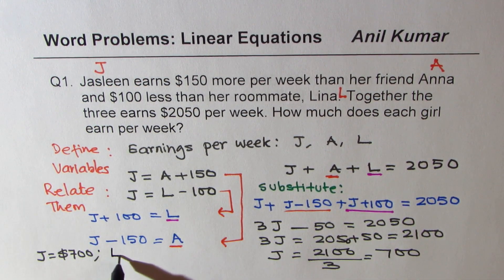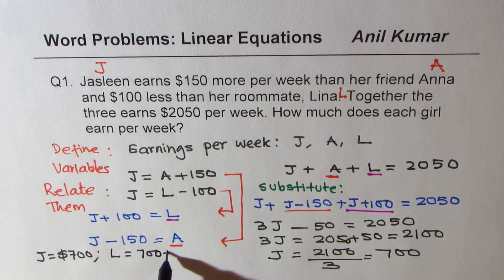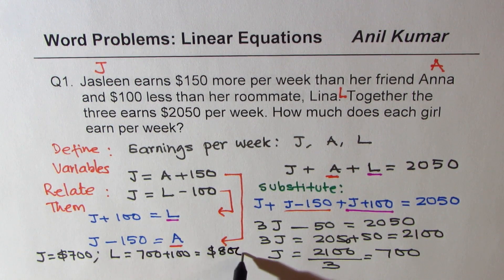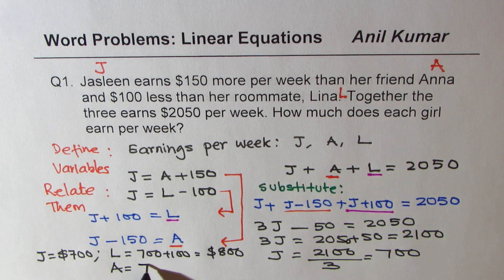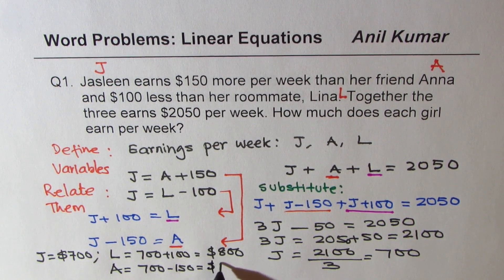So now we get what J is. J is $700. L is 700 plus 100, which is $800. And A is 700 minus 150, which is $550.